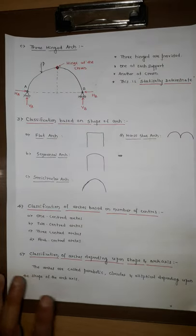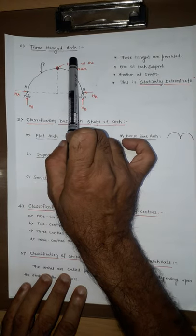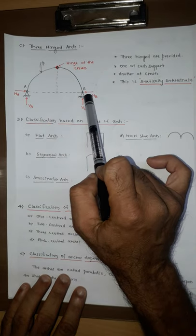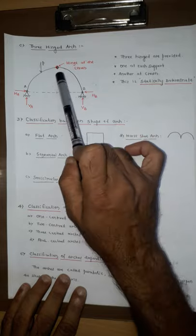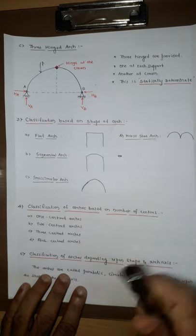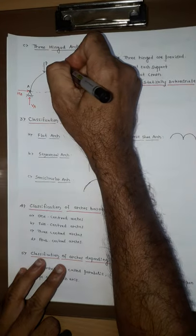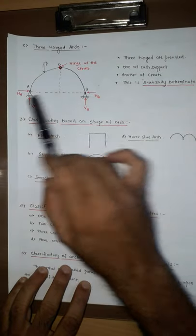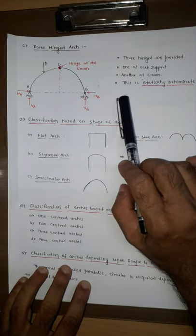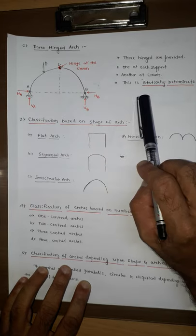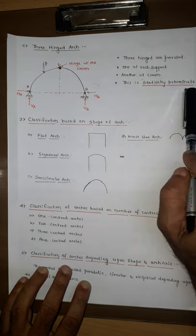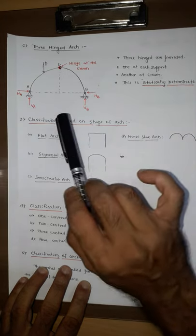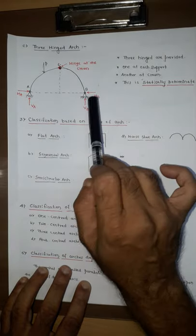The third classification is the three-hinged arch. As the name suggests, there are three hinges: one at support A, one at support B, and one additional hinge at the crown point C. An important observation is that the three-hinged arch is statically determinate, meaning the three equilibrium equations are sufficient to find out the unknowns.